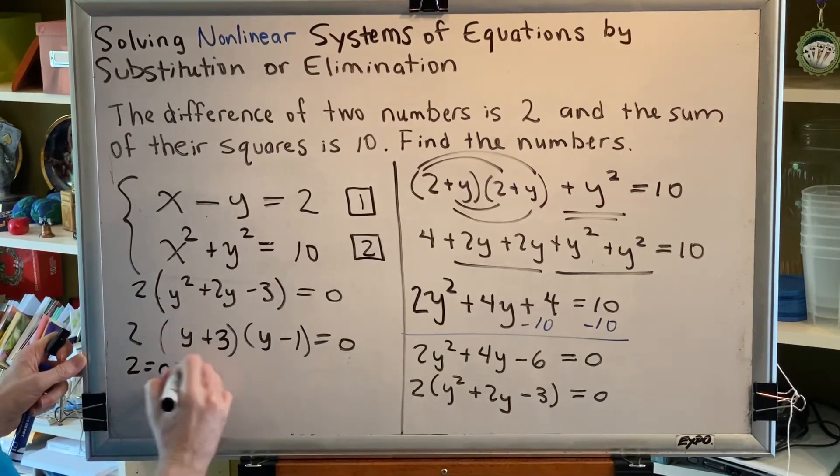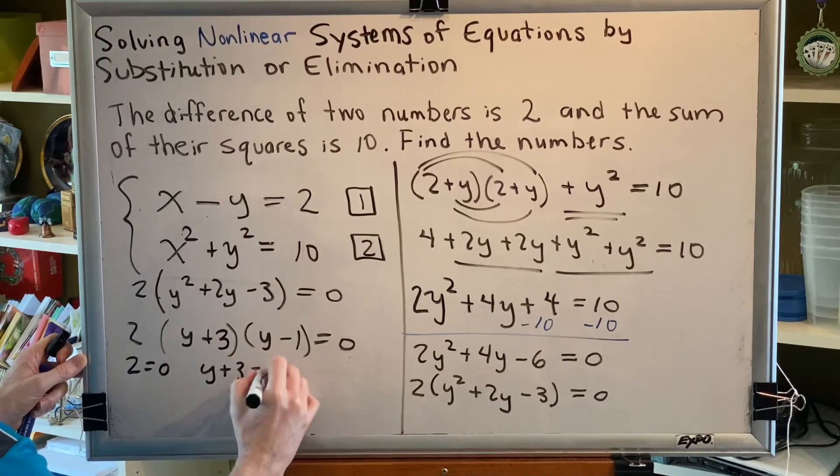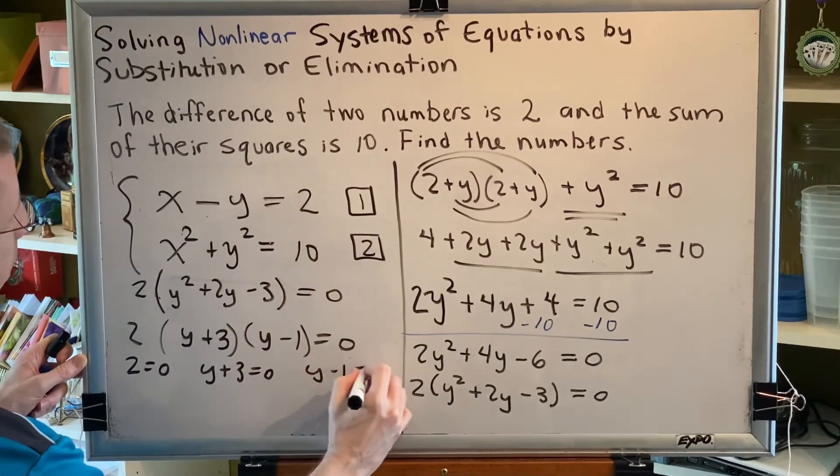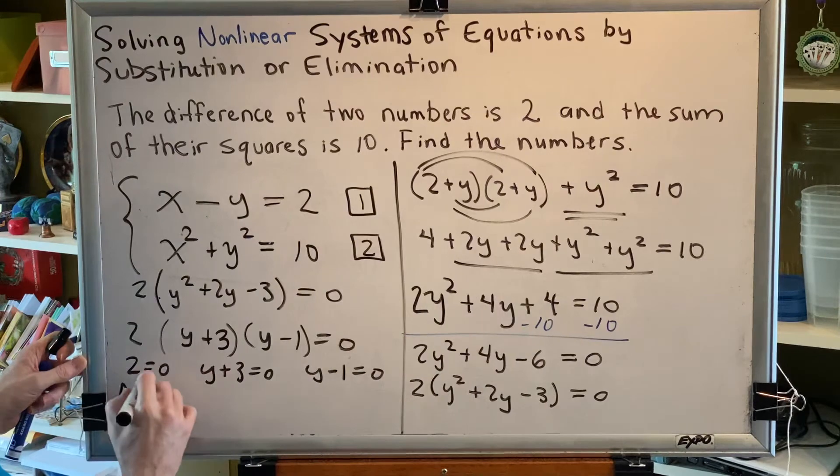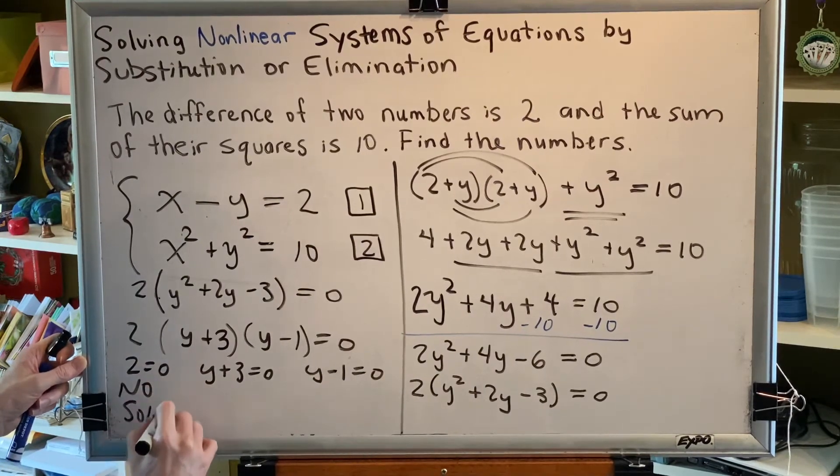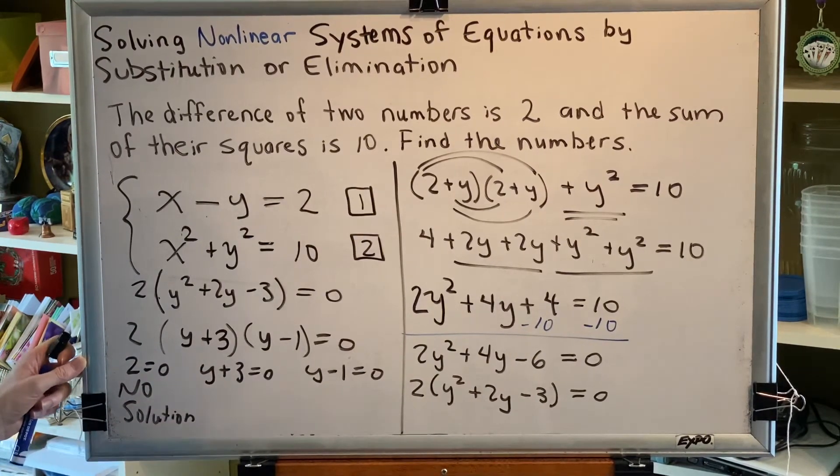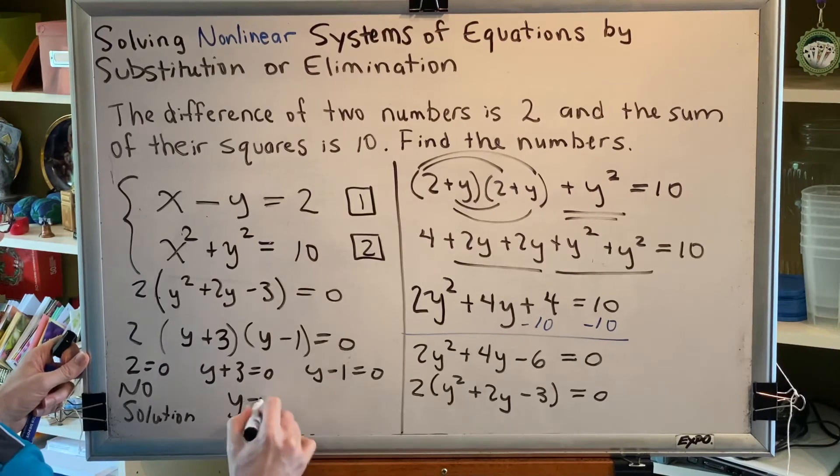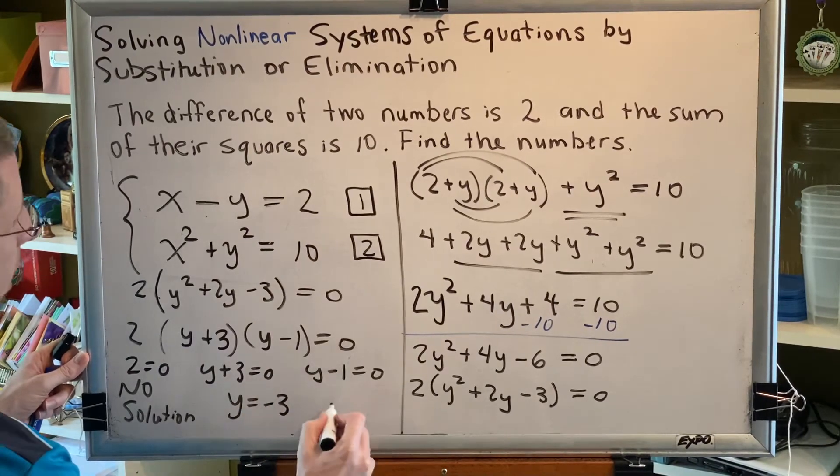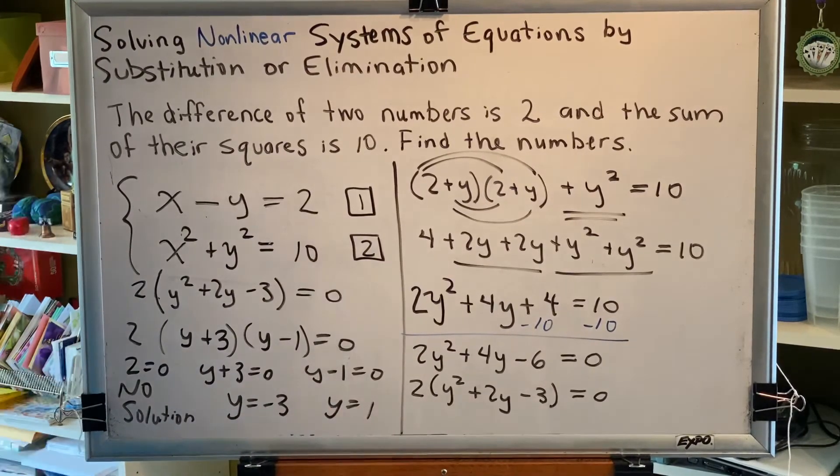2 equals 0. y plus 3 equals 0. y minus 1 equals 0. This has no solution because 2 equals 0 is false. It's a contradiction. Subtracting 3 on both sides gives me y equals negative 3. Adding 1 on both sides gives me y equals 1.